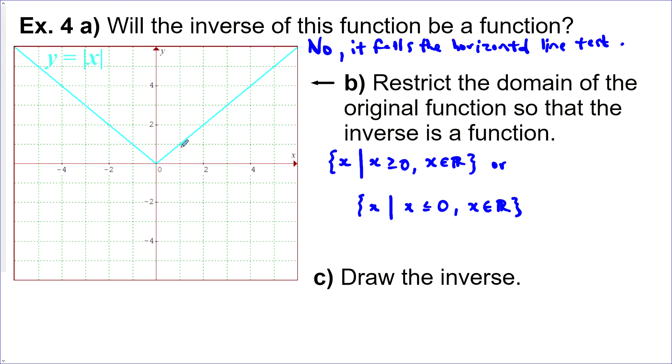Now we want to draw the inverse. So that's reflected in the line y equals x here. And so this isn't going anywhere. There's actually infinitely many invariant points here. And then this would be heading down this way instead. So you can see it's definitely not a function. Now we can see if we tried the vertical line test on this, it wouldn't work. And let's label this graph as x equals the absolute value of y.